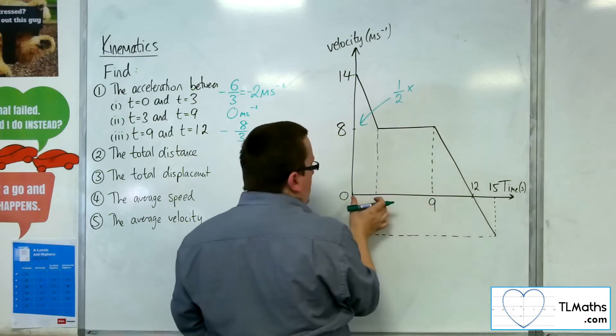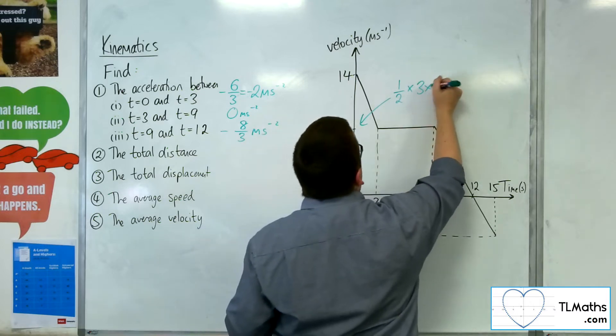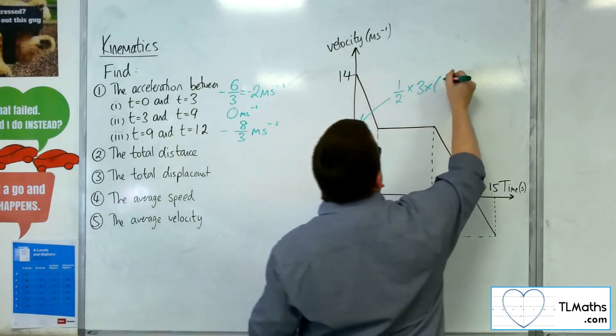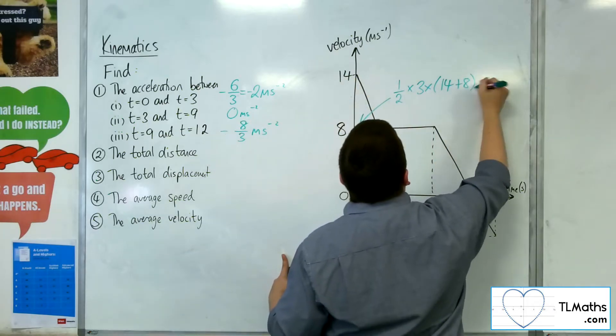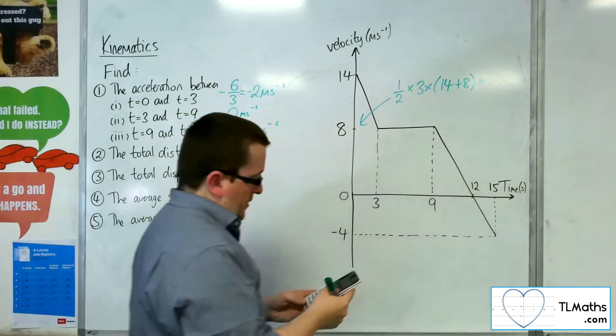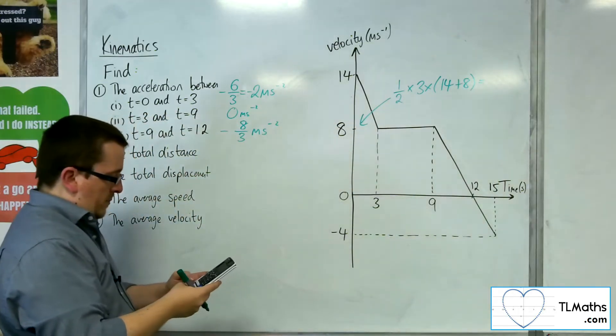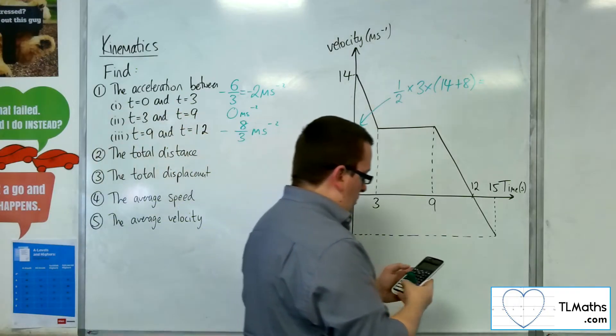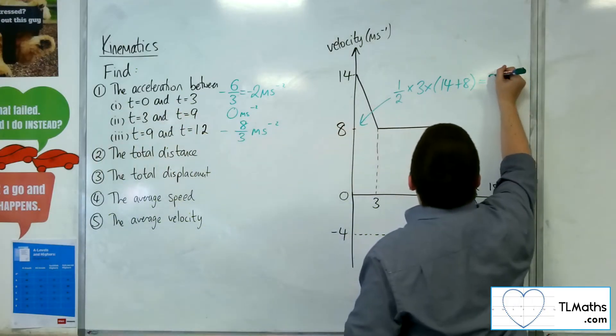So 1 half times h, the width of the strip, times by the 14 plus 8, so the sum of the sides. So 14 plus 8, and then times that by 3, and divide that by 2, gets us to 33 metres.